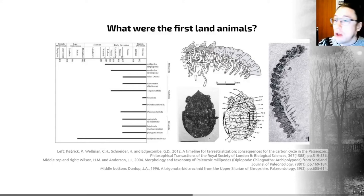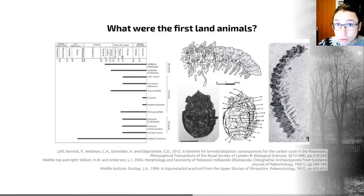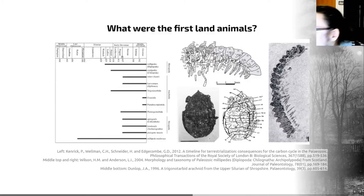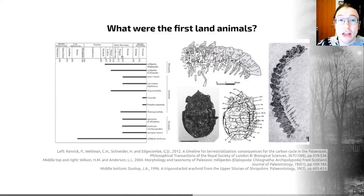A few years ago, I would have been talking about the millipedes shown here as the earliest land animals. These are fossils from a place called Stonehaven in Scotland. These fossils have spiracles — the apparatus by which millipedes breathe on land — you can see them labeled SP right there. And so these were, for a long time, our earliest land animals. But those rocks were re-aged just this year, and they are now younger than we used to think they were.